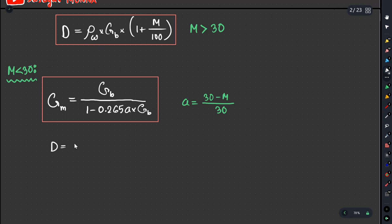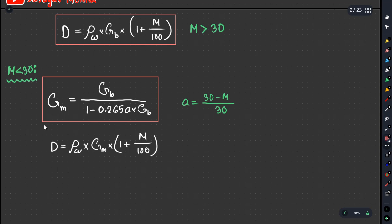The density is equal to ρw into 1 plus M divided by 100.